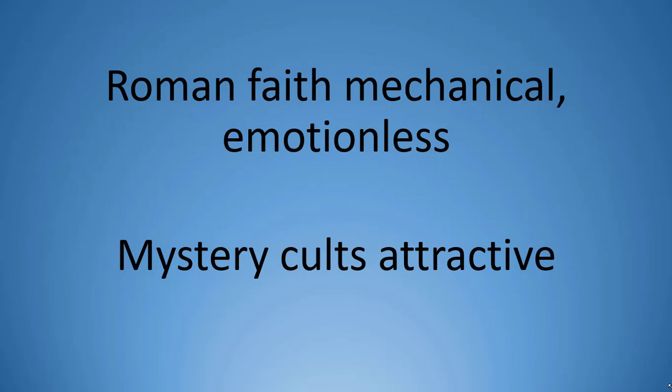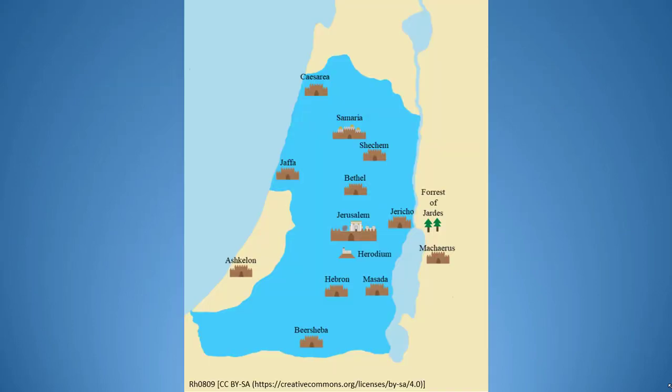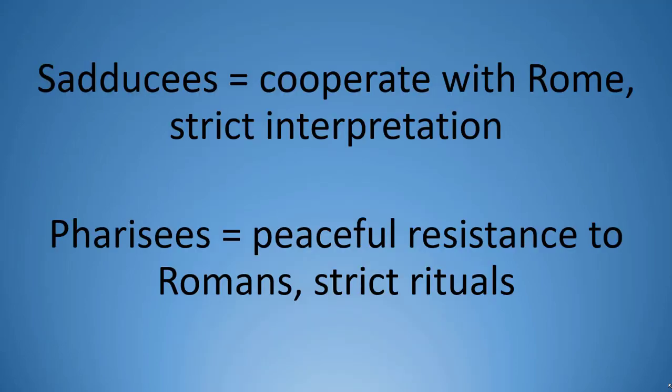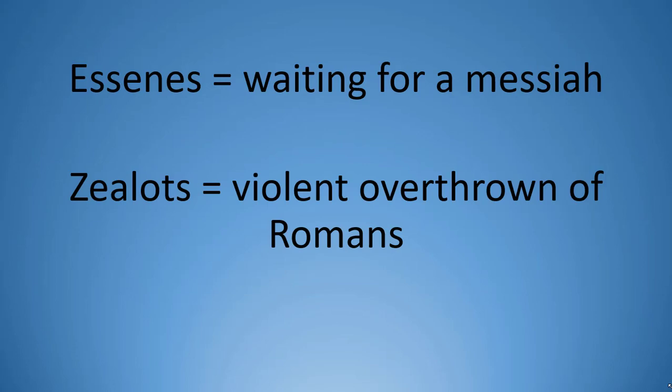Since Christianity will emerge out of Judaism, it's to the Jewish context we must now turn. Rome had made Judea a province in 6 CE, and there were four different groups of Jews with different opinions regarding the relationship with Rome. The Sadducees wanted to cooperate with the Romans and favored a strict interpretation of the Old Testament. The Pharisees wanted to be free from the Romans but advocated peaceful measures and also favored strict observance of Jewish rituals. The Essenes were waiting for a Messiah to usher in paradise, freeing the Jews from all forms of oppression. Finally, the Zealots also wanted Judea free from Roman control, but unlike the Pharisees, wanted to use violence to get the job done.